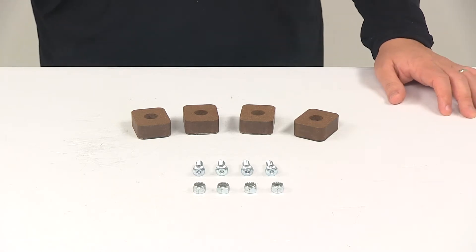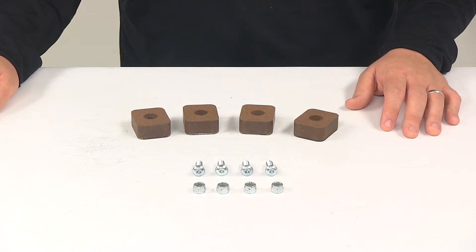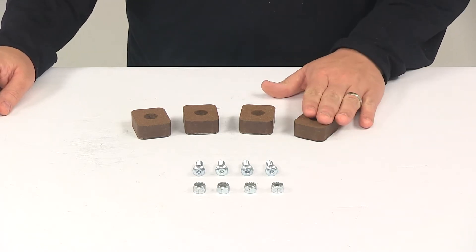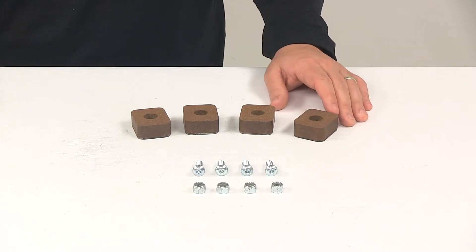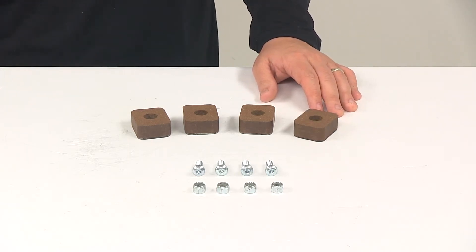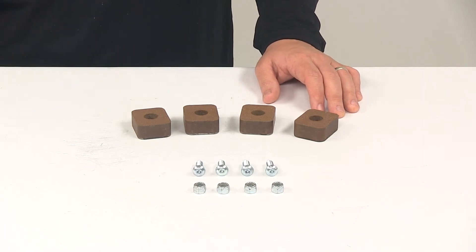Today we're going to be taking a look at the replacement friction pad kit for Reese SteadyFlex weight distribution systems. This kit replaces the friction pads on your Reese SteadyFlex weight distribution system part numbers RP66559, 66560, and 66561.